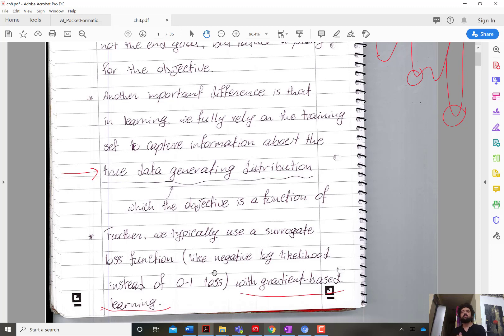but even the training cost itself I'm using a surrogate for it, because I am restricted by the choice of the way I do optimization, which is the gradient based learning mechanism. It imposes a restriction on the types of cost functions that I use.